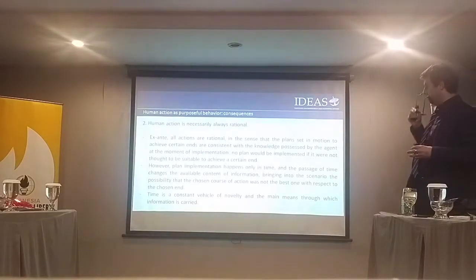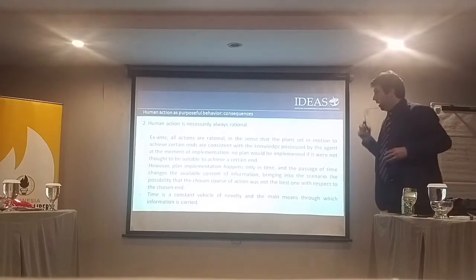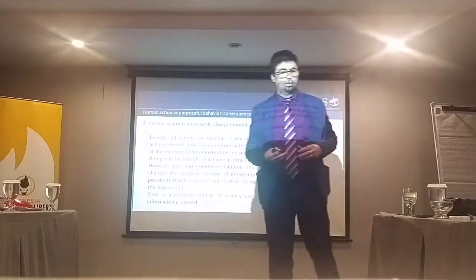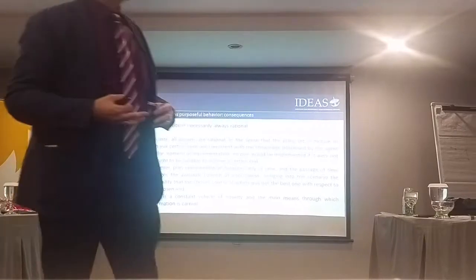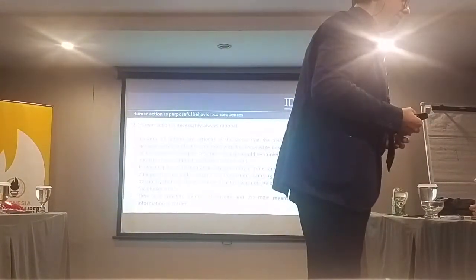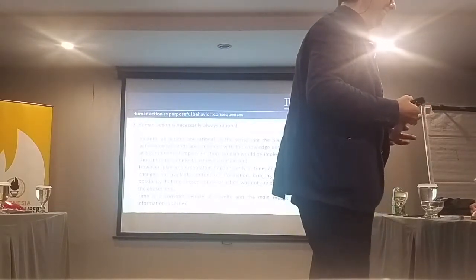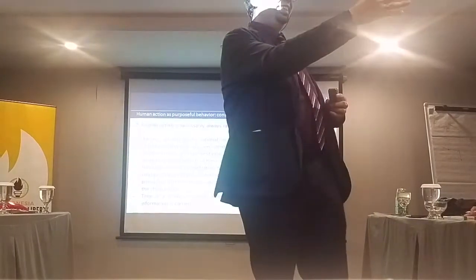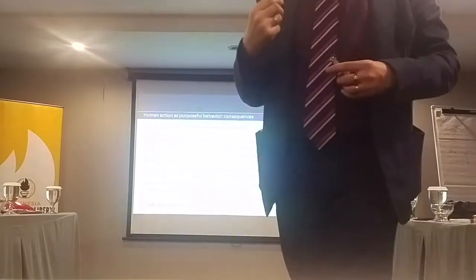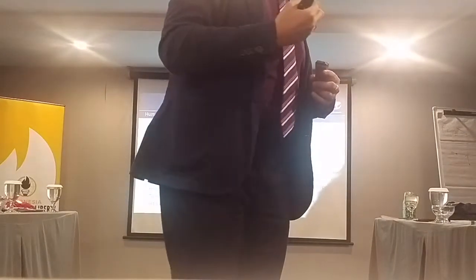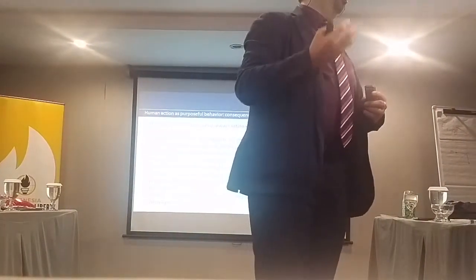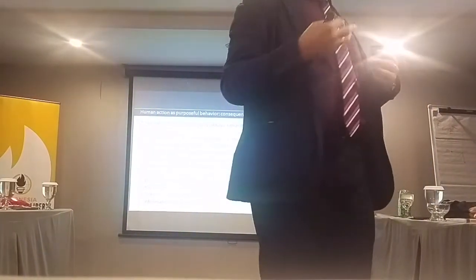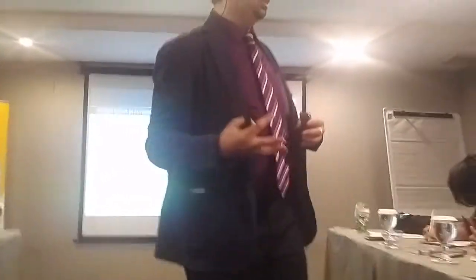Human action in this sense is always rational — this is another problem with mainstream economics and all the discussion about rationality. In mainstream economics, rationality is associated with perfect knowledge. Only the homo economicus — which doesn't exist — is perfectly rational. Rationality according to mainstream economics means people never make mistakes, and if there are mistakes it means people are irrational. This is a very limiting way to look at rationality.